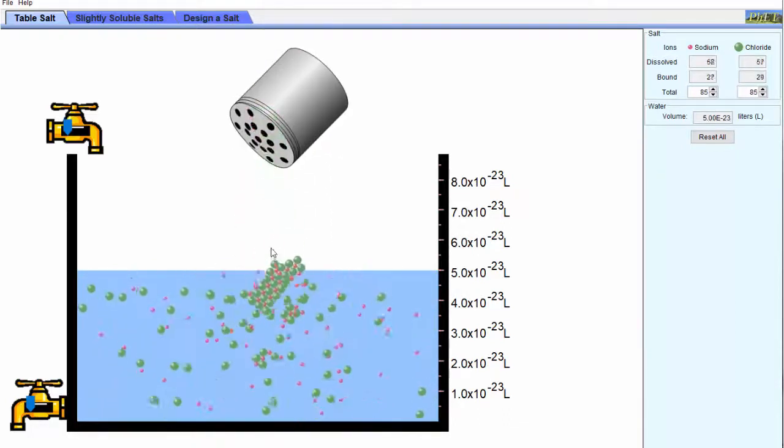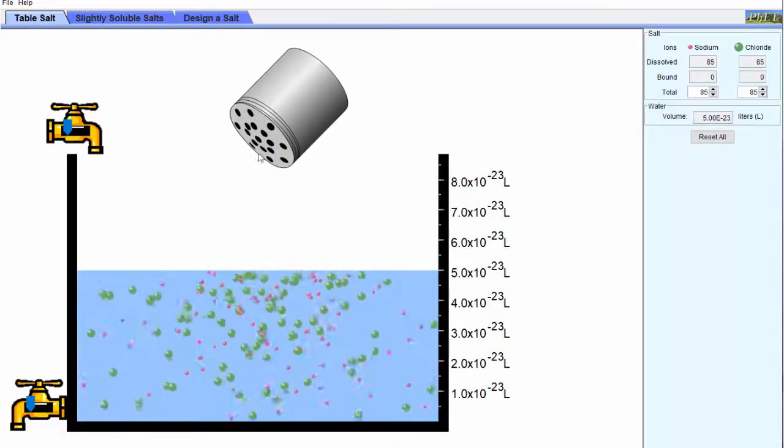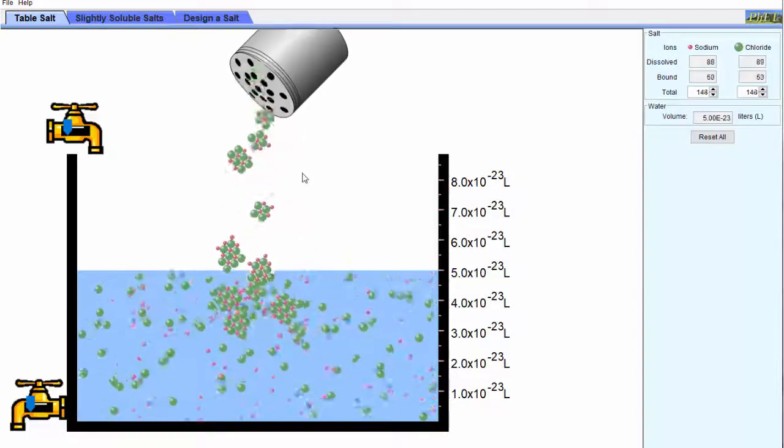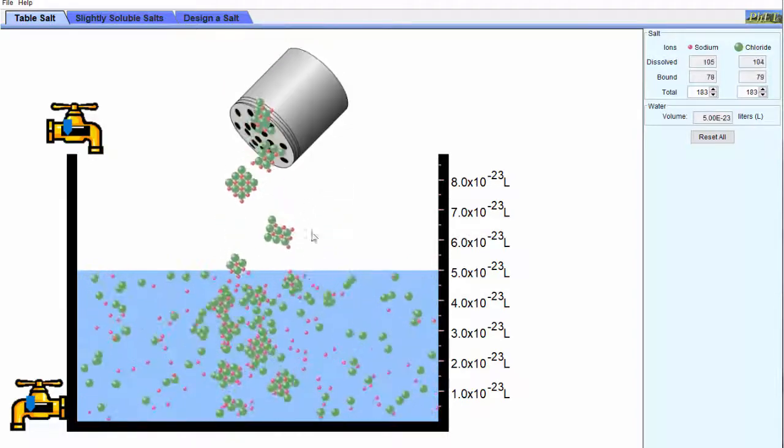Note that at first the sodium chloride crystals dissolve, as you'd expect. This is what happens when you put salt into water. The ions separate and they diffuse through the water.